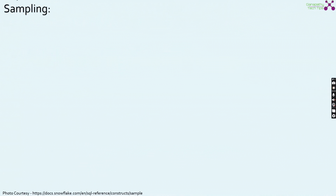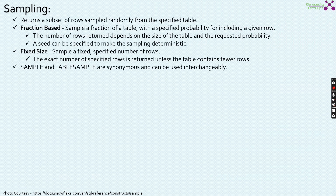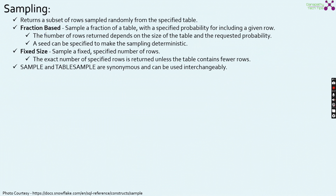At last, we are going to discuss about sampling. Sampling is a pretty evident topic that most of you might be aware of. It returns a subset of rows sampled randomly from the specified table. There are two different sampling methods: one is fraction-based, and the other is fixed size-based.